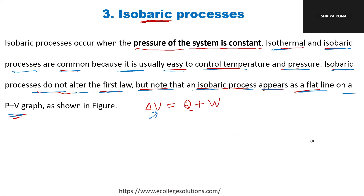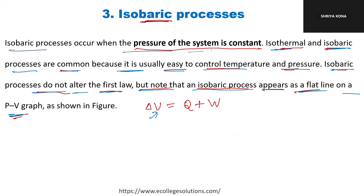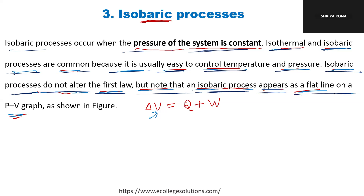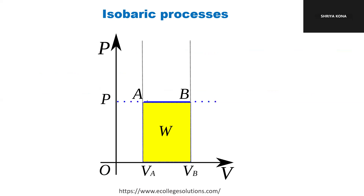The third process is isobaric — 'bar' is a unit of pressure, so isobaric means the pressure of the system remains constant. Isothermal and isobaric processes are common because it is easy to control temperature and pressure. An isobaric process does not alter the first law, but it appears as a flat horizontal line on a PV graph because pressure stays constant. The area under the flat line still represents work done, changing from volume V1 to V2.